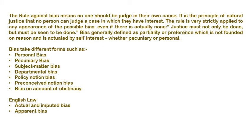English law recognizes two types of bias: first, actual and imputed bias, and second, apparent bias. The objective of this rule is to ensure that public confidence is maintained in the administrative and adjudicatory process, which must be impartial.